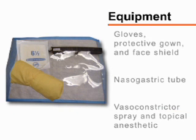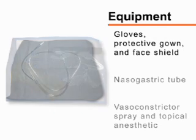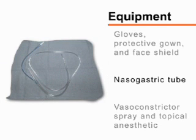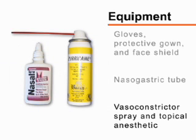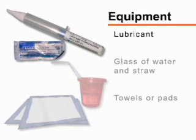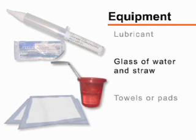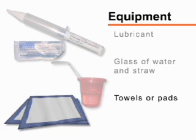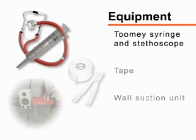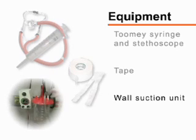Begin by gathering the equipment you will need. This will include gloves, a protective gown, and face shield, an appropriately sized nasogastric tube, vasoconstrictor spray, and a topical anesthetic such as benzocaine or lidocaine solution with an atomizer. Obtain a lubricant, a glass of water with a straw, towels or blue pads, a 60cc catheter tip Tumi syringe, a stethoscope for tube confirmation, tape, and a wall suction setup.